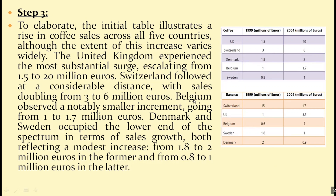Belgium observed a notably smaller increment, going from 1 to 1.7 million euros. Denmark and Sweden occupied the lower end of the spectrum in terms of sales growth, both reflecting a modest increase: 1.8 to 2 in the former and 0.8 to 1 in the latter. We put them together in the same sentence because both have the same increment of 0.2. So we start with the highest level of increase and move downward, combining similar numbers in one sentence.